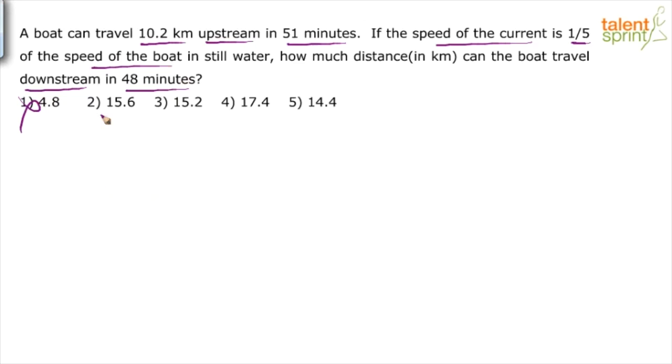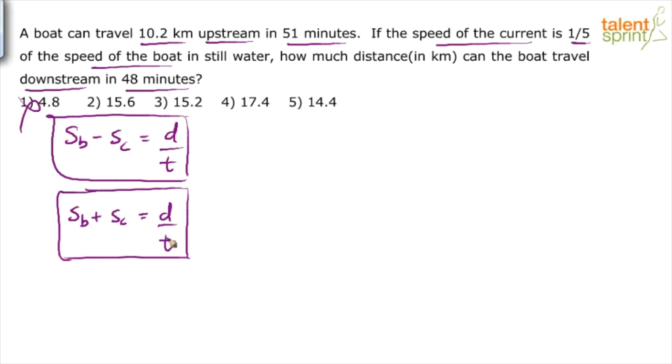One point that we need to note here is the formula. We know the formula for upstream and downstream travel of a boat. Speed of the boat minus speed of the current equals distance by time, and speed of the boat plus speed of the current equals distance by time. This is for upstream. This is the upstream case. In upstream, you have to take difference of speeds. And this is downstream case, sum of the speeds.